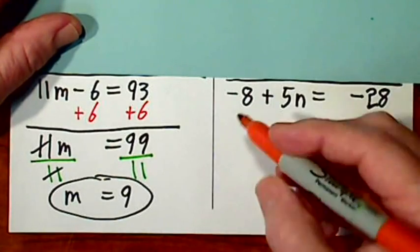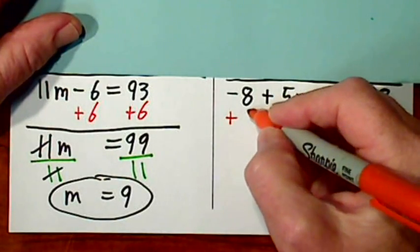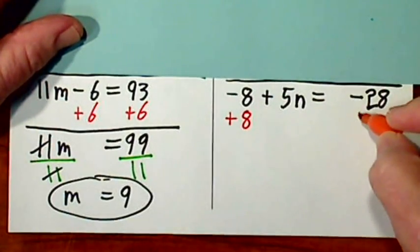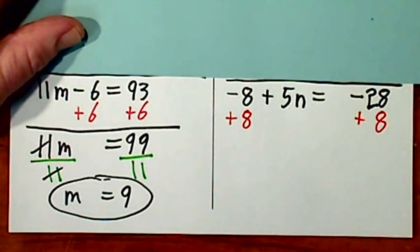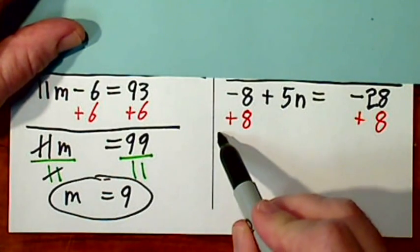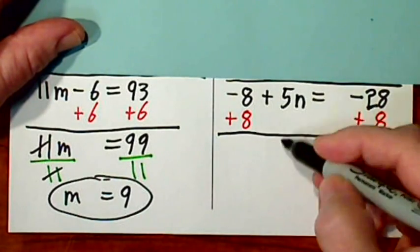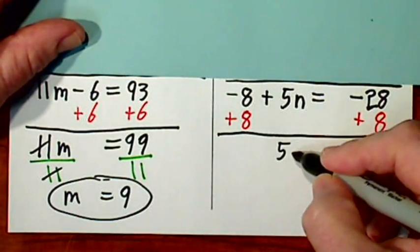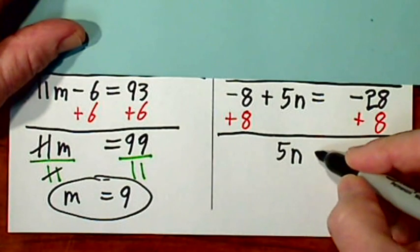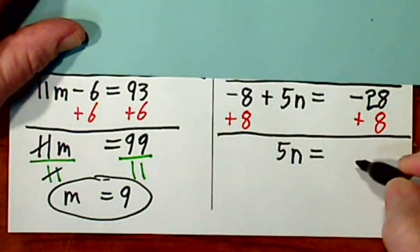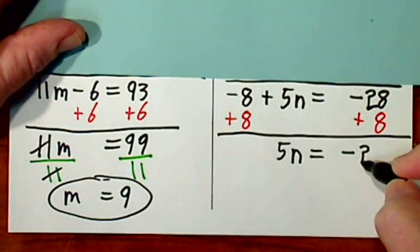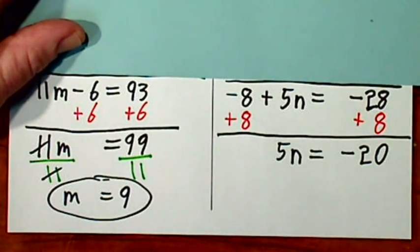I want to get rid of that negative 8. So I'll put a positive 8 and a positive 8. Draw a line and bring everything down. That's a 0, 5n. I don't need a positive indicator. Signs are different. We subtract, keep the sign of the larger.